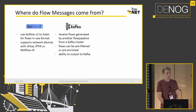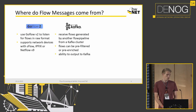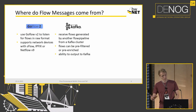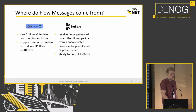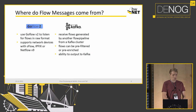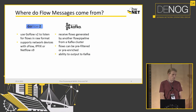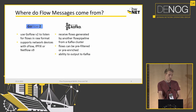We are also able to receive flows from Kafka. So we can use the same pipeline we had for collecting flows with GoFlow, then use the Kafka consumer at the start of another pipeline and do all the same things on those flows — they can be pre-filtered or pre-enriched already. That's basically the in and out of the flows we provide.